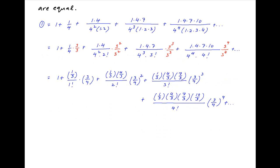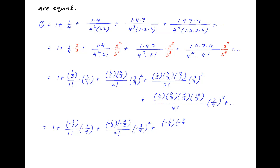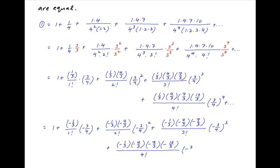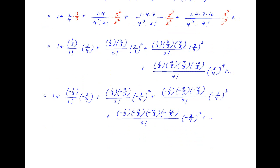Notice that the numerator of each term from the second term onwards is the product of an even number of terms. Multiplying each of those terms in the numerator by minus 1, we get 1 plus (−1/3) upon 1 factorial times (−3/4), plus (−1/3) times (−4/3) divided by 2 factorial times (−3/4) squared, plus (−1/3)(−4/3)(−7/3) upon 3 factorial times (3/4) cubed, plus (−1/3)(−4/3)(−7/3)(−10/3) divided by 4 factorial times (−3/4) to the power 4, plus and so on.